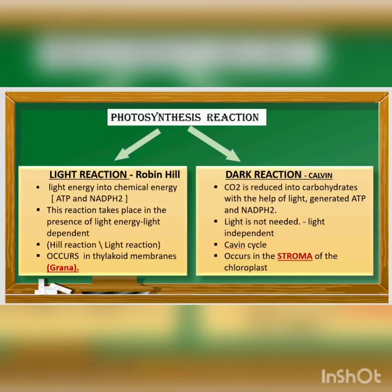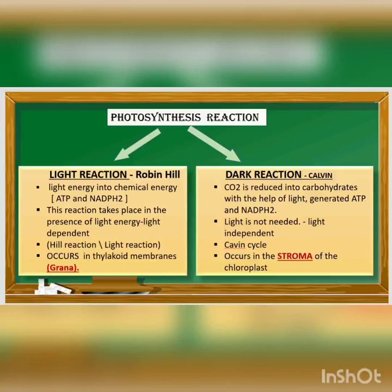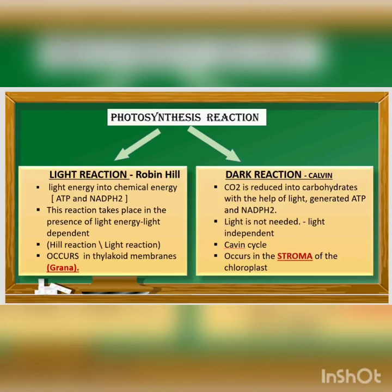ATP stands for adenosine triphosphate and NADPH₂ stands for nicotinamide adenine dinucleotide phosphate. The dark reaction was described by Melvin Calvin, so it is called the Calvin cycle. It is light-independent. In the dark reaction, carbon dioxide is reduced into carbohydrate with the help of ATP and NADPH₂. The dark reaction occurs in the stroma of the chloroplast — this is the key difference: light reaction occurs in the grana, dark reaction occurs in the stroma.